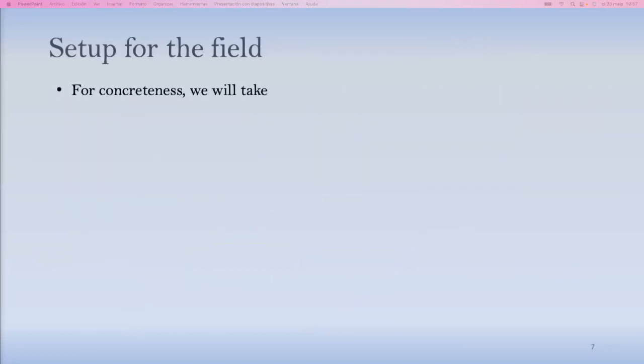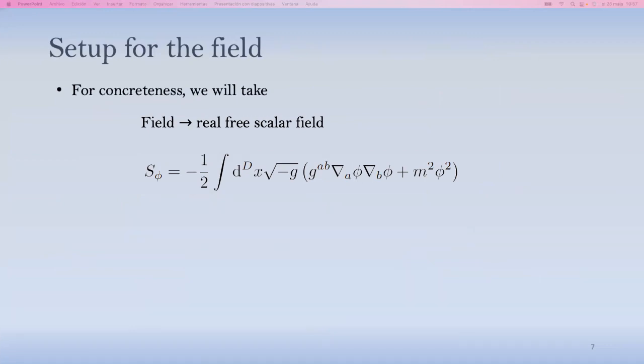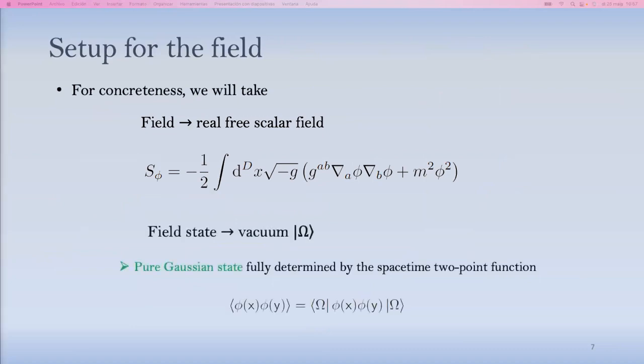The setup for the field that we'll take in order for the technical things that I'm about to say to work is that we'll take the field to be a real scalar field. So a quadratic real scalar field in a possible curved spacetimes. It could have a non-minimal coupling here. It wouldn't matter for the things that I'm able to say. And I'm going to take the field to be in the vacuum, which, for our purposes, can be any pure Gaussian state of the field theory. That's the only important thing that I'm going to use, is the fact that this is a pure Gaussian state, and therefore it's determined entirely by the two-point functions of the field.